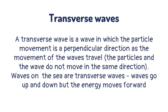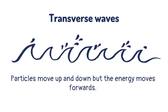A transverse wave is a wave in which the particle movement is in a perpendicular direction to the movement of the waves' travel. This means that the particles and the wave do not move in the same direction. Waves on the sea are transverse waves — the waves go up and down but the energy moves forward. In transverse waves the particles move up and down but the energy moves forwards.